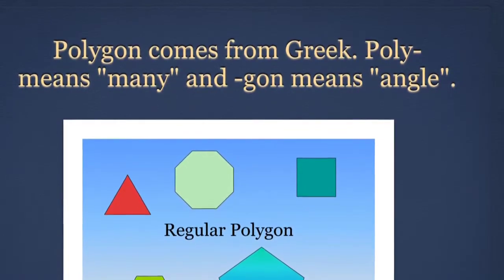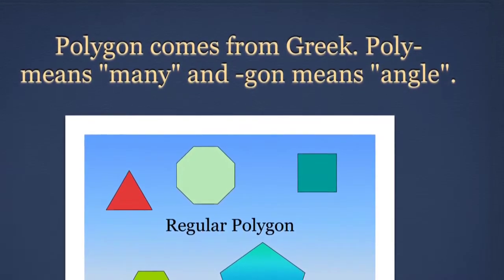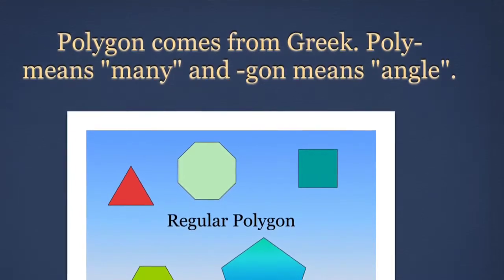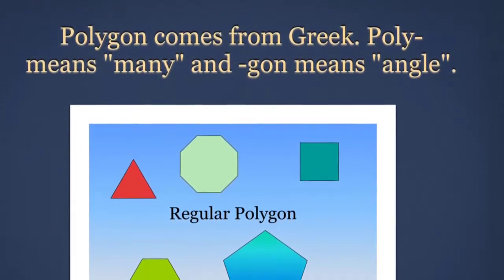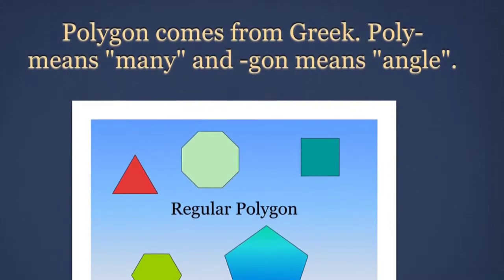Polygon comes from Greek. Poly means many and gon means angle. So a polygon has many angles.